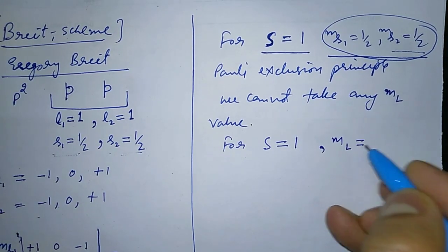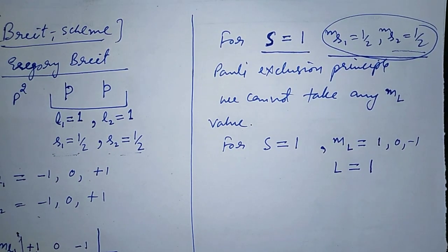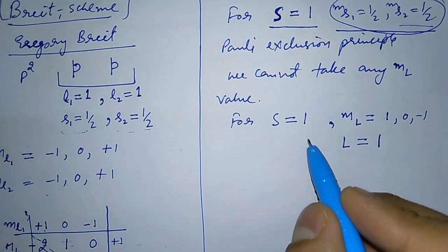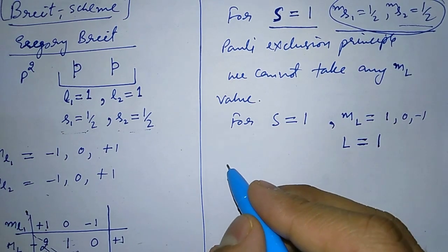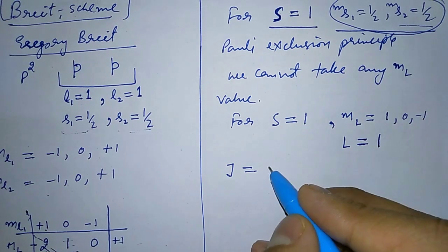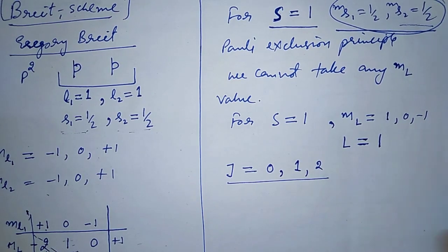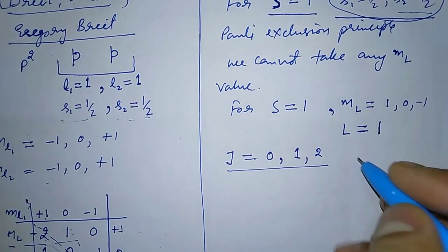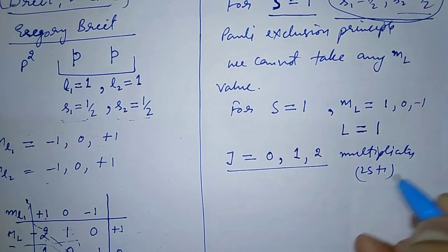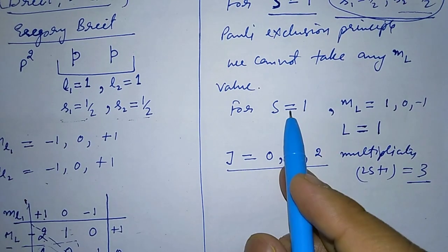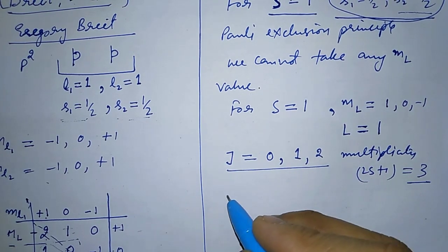For S = 1 and L = 1, the J values range from |L−S| = 0 to L+S = 2, giving J = 0, 1, 2. The multiplicity is 2S+1 = 2(1)+1 = 3. So the terms are ³P₀, ³P₁, and ³P₂.